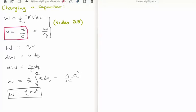Integrating all of this, we get that the work done is equal to q squared over twice C. Or another way we can rewrite this is the work done is one half CV squared.